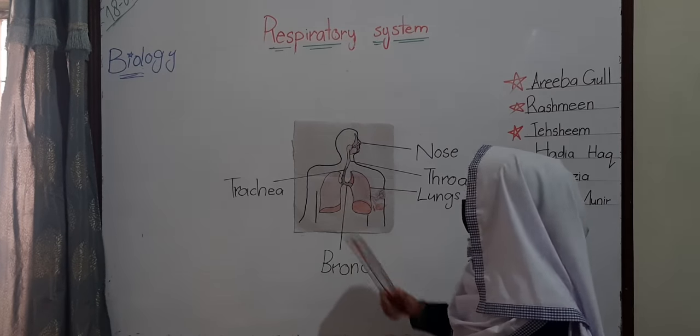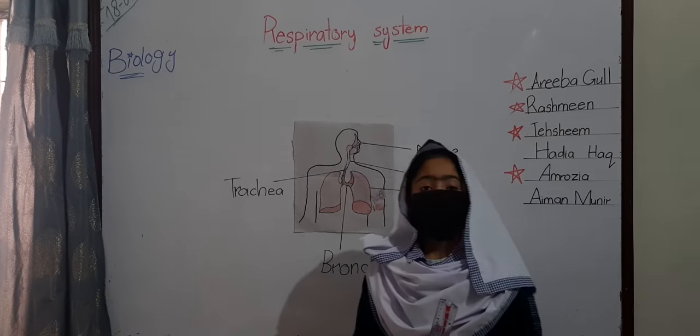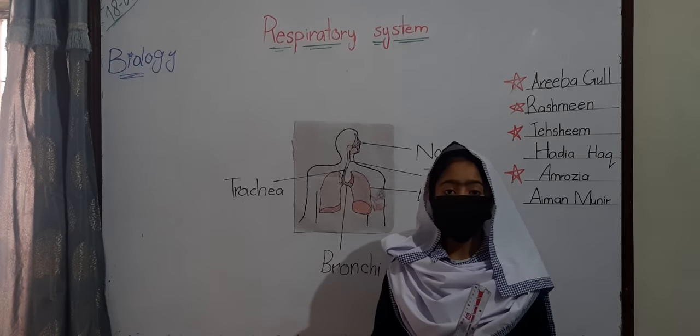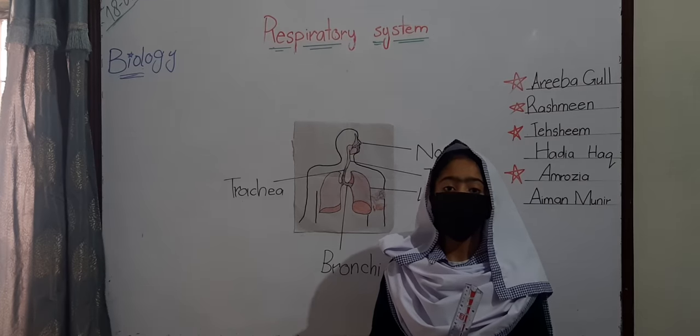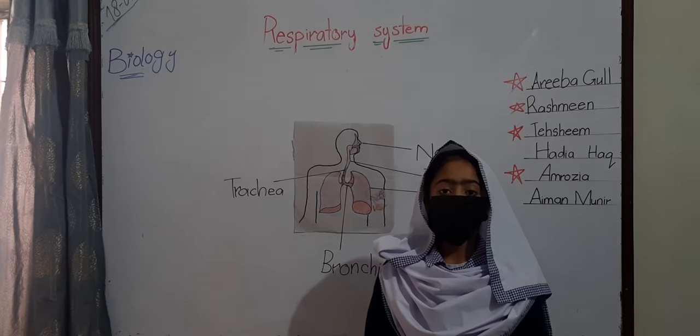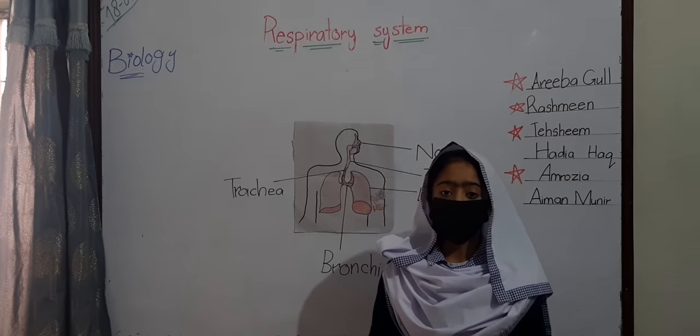Bronchi. When the trachea enters the lungs, it is divided into two parts. Each part is called a bronchus.